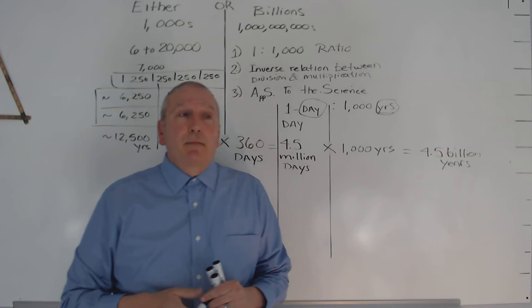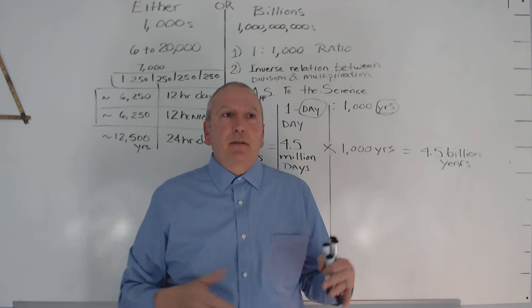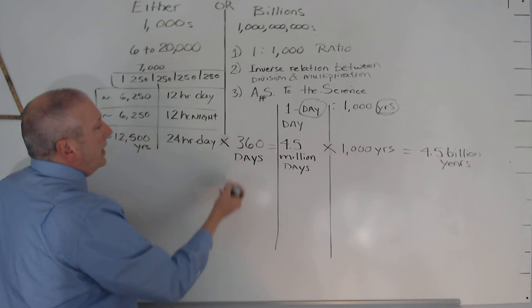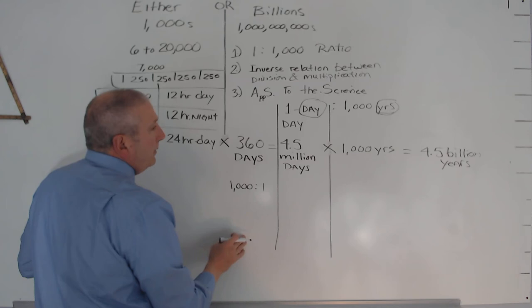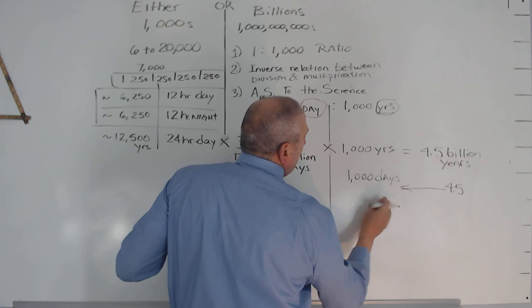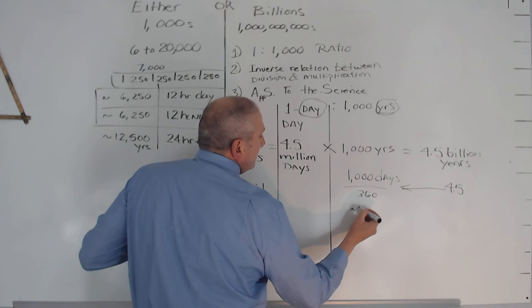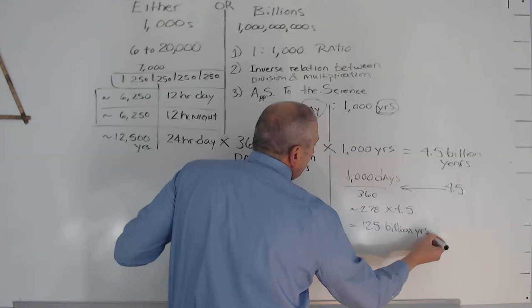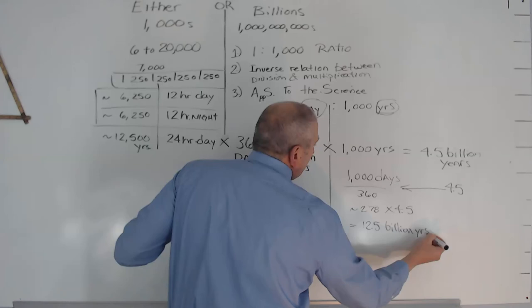But that wasn't the end. He noticed we hadn't defined our terms. What is young? What is old? What's the difference between the time of something's existence and the amount of decay? When this settled out, it was quite remarkable. We came back this direction, going through the same process starting with a thousand to one. If you take this 4.5 multiplied by a thousand days, changing from years to days, when you divide 360 into this you get approximately 2.78. Multiply that by 4.5, that equals 12.5 billion years. That's the amount of decay using the holistic approach.